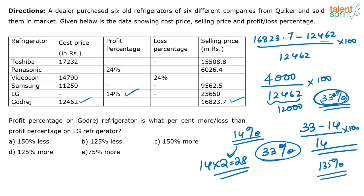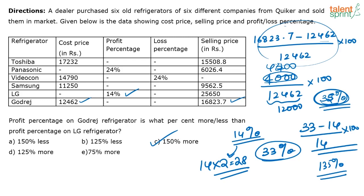The actual values are: 16,823.7 minus 12,462 equals 4,361. So 4,361 divided by 12,462 into 100 gives the exact profit %. Since we approximated as 33%, the answer is a little higher. Taking 4,400 by 12,400 gives a percentage closer to 35%, and (35 − 14) / 14 × 100 equals 150%. So the correct answer is option C, 150% more.